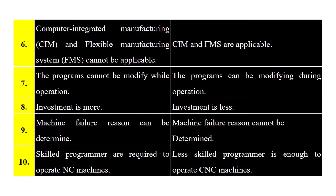Eight: in NC machines, investment is more; in CNC machines, investment is less. Nine: in NC machines, machine failure reason can be determined; in CNC machines, machine failure reason cannot be determined. Ten: in NC machines, skilled programmers are required to operate; in CNC machines, less skilled programmers are enough to operate.